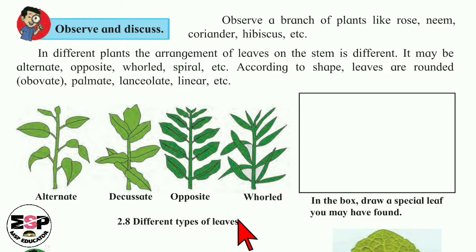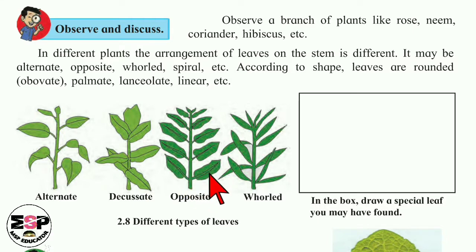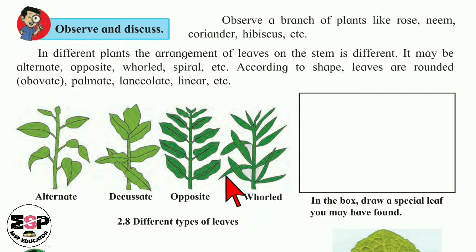Here a figure is shown of different types of leaf arrangements. First one is alternate — one leaf on each side alternately. Decussate arrangement means leaves are arranged in a cross shape on the stem. Then opposite — the leaves are arranged on the stem one in front of each other. And whorled means leaves are arranged in a whorl shape, in one line around the stem.